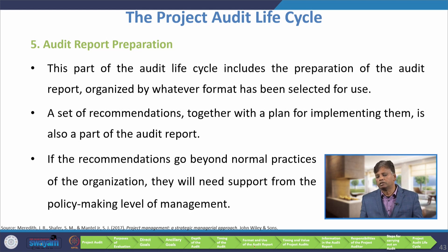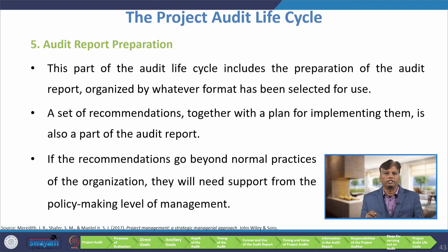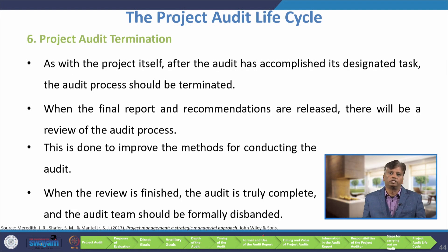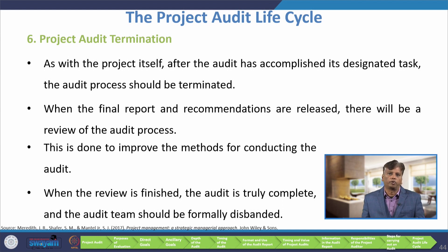The next stage is audit report preparation. This part of the audit life cycle includes the preparation of the audit report organized by whatever format has been selected. A set of recommendations together with a plan for implementing them is also part of the audit report. If the recommendations go beyond normal practices of the organization, they will need support from the policy-making level of management. The last stage is project audit termination. After the audit has accomplished its designated task, the audit process should be terminated. When the final report and recommendations are released, there will be a review of the audit process to improve methods for conducting the audit. When the review is finished, the audit is truly complete and the audit team should be formally disbanded.